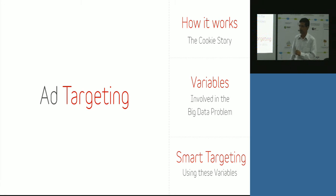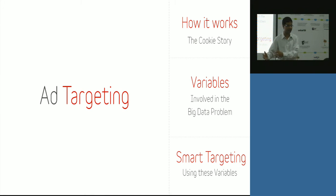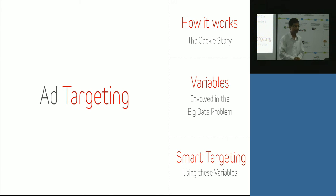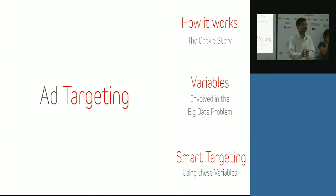The second part is what are the variables involved in ad targeting? Yes, there is one cookie, but based on that cookie you derive a lot of other variables — whether it's the color of the ad or the interest of the user. And when you toss all of these variables into the mix, that's a big data problem. We literally have two billion records getting into our database every month. This is not just about getting the data — it's about processing that data to actually target ads to the right users.